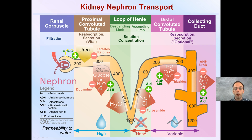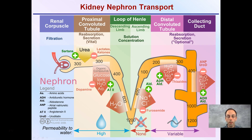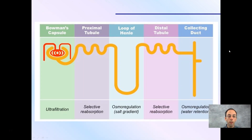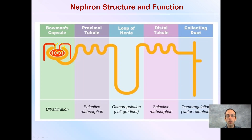This might seem a little complex at first — I'll admit it's not the easiest to follow initially. What I want to draw your attention to are these distinctive sections: the filtration step, the PCT (proximal convoluted tubule), the loop of Henle, the distal tubule, and the collecting duct. We're going to go over each of these in detail, using an image that's a little less intimidating, showing the same region with the nephron stretched out.